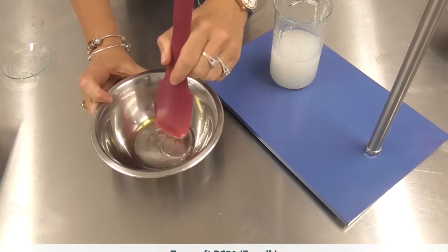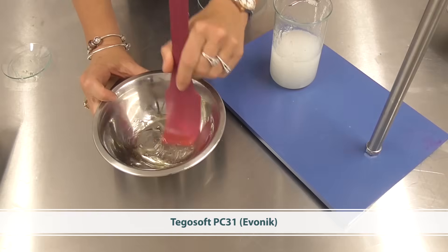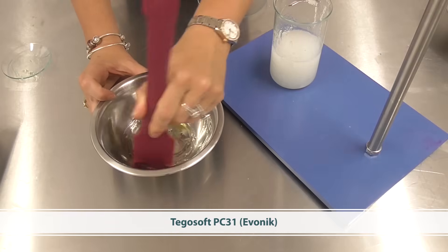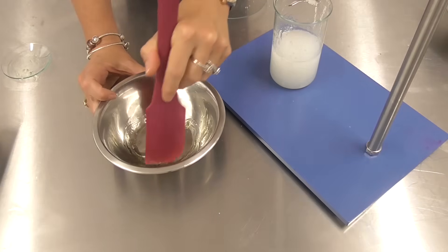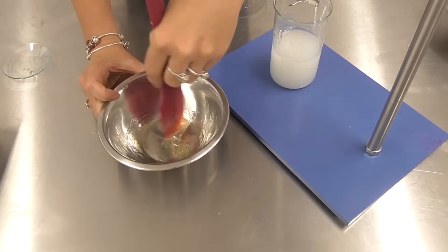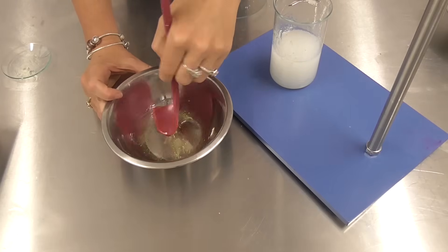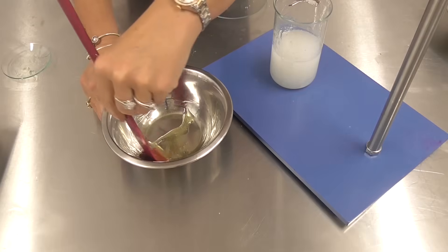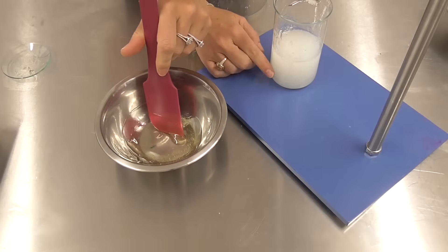I've used Tigo soft PC 31 because I find this really easy to incorporate into formulations, yet it solubilizes really well and it provides a really great skin feel to the product. Now if you use the sulfur pond on its own, you would notice that yes it foams and cleans exceptionally well, but it also feels quite harsh on the skin on its own, and that's because it is a sulfate. I also had a chelating agent in the starting water phase.